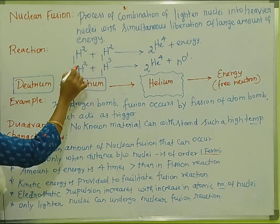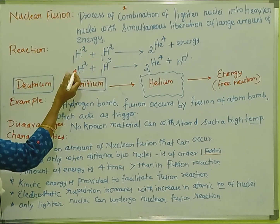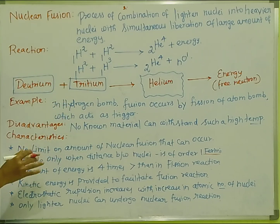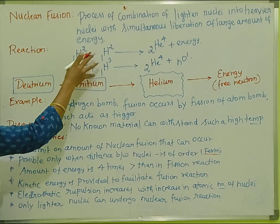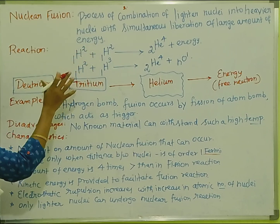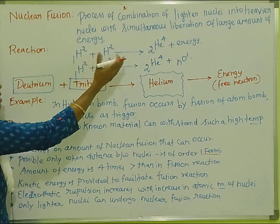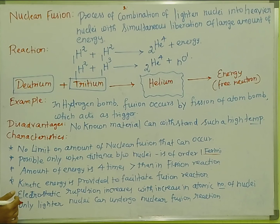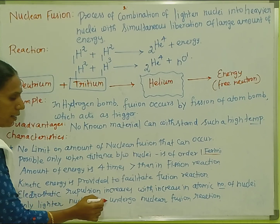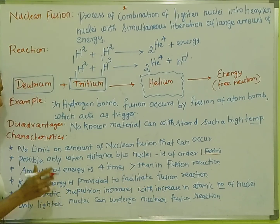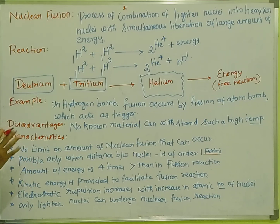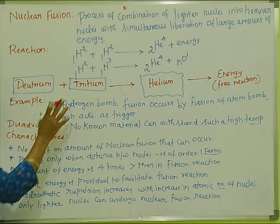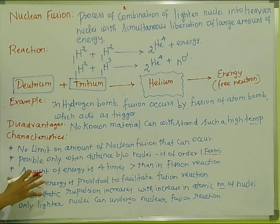What nuclei are preferred for fusion? The nuclei with lower atomic number have less electrostatic repulsion. Only lighter nuclei undergo nuclear fusion reaction. For lighter nuclei, this reaction is favorable. Heavier nuclei would require too much energy to overcome the electrostatic repulsion.